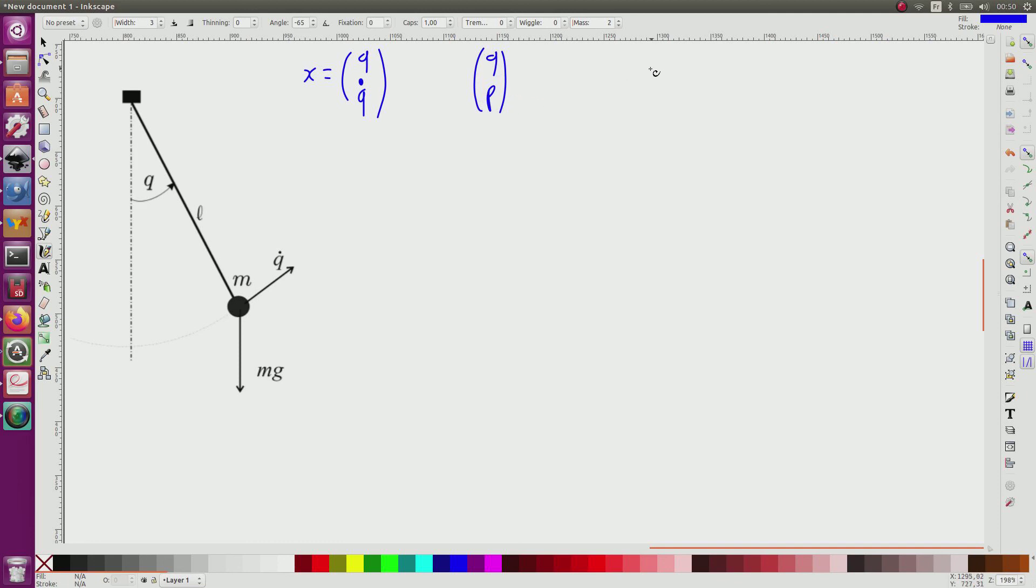The momentum p is equal to j multiplied by q dot, where j equals ml², since all the mass is concentrated on the extremity of the rod. So if I know q dot I know p, and if this is a state vector, this one is also a state vector because from p I get q dot, from q dot I get p.